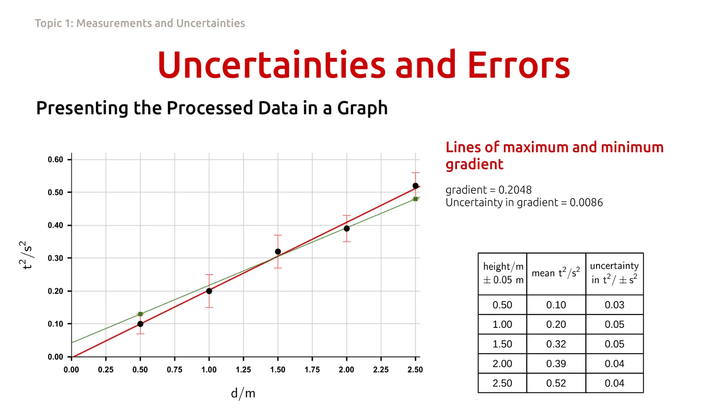For that reason, to ensure that we take into account these error bars, we will determine the uncertainty in gradient by drawing two lines, one with maximum gradient and the other with minimum gradient.